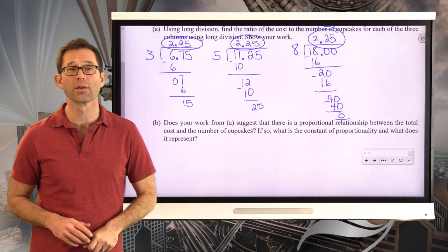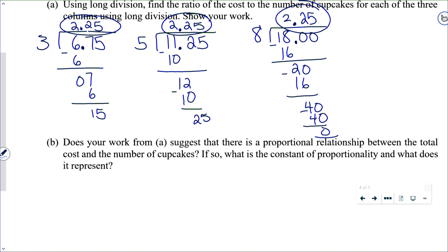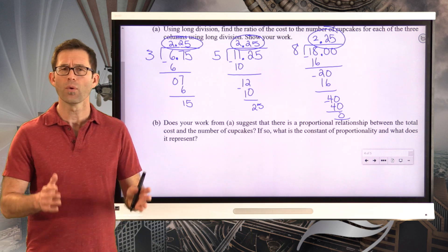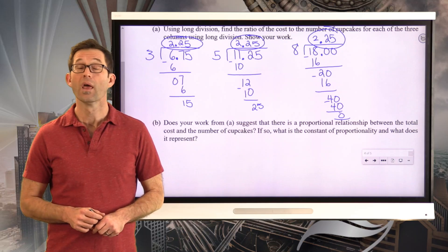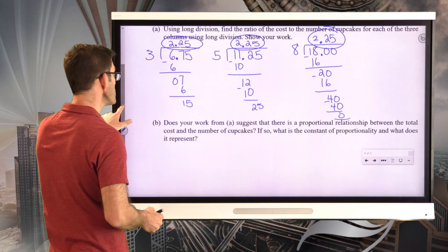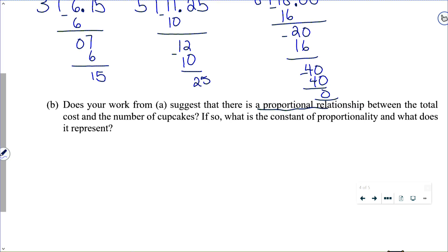So, now let's take a look at letter B. Does your work from A suggest that there is a proportional relationship between the total cost and the number of cupcakes? So, that should be yes or no. If so, what is the constant of proportionality and what does it represent? And the answer is yes, because it is the same ratio each time.